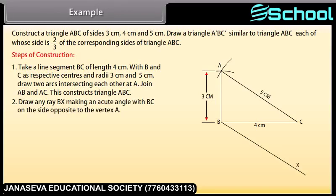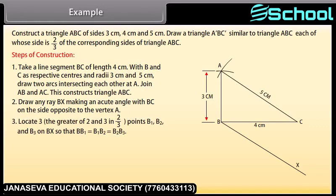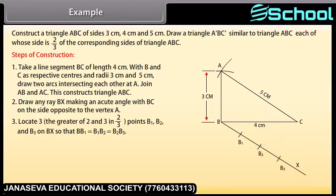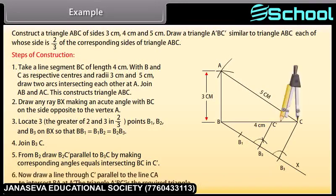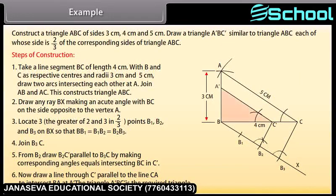Draw any ray BX making an acute angle with BC on the side opposite to the vertex A. Locate 3 points — the greater of 2 and 3 in 2/3 — B1, B2 and B3 on BX so that BB1 equals B1B2 equals B2B3. Join B3 to C. From B2, draw B2C' parallel to B3C by making corresponding angles equal, intersecting BC at C'. Now draw a line through C' parallel to the line CA to intersect BA at A'. The triangle A'BC' is the required triangle.